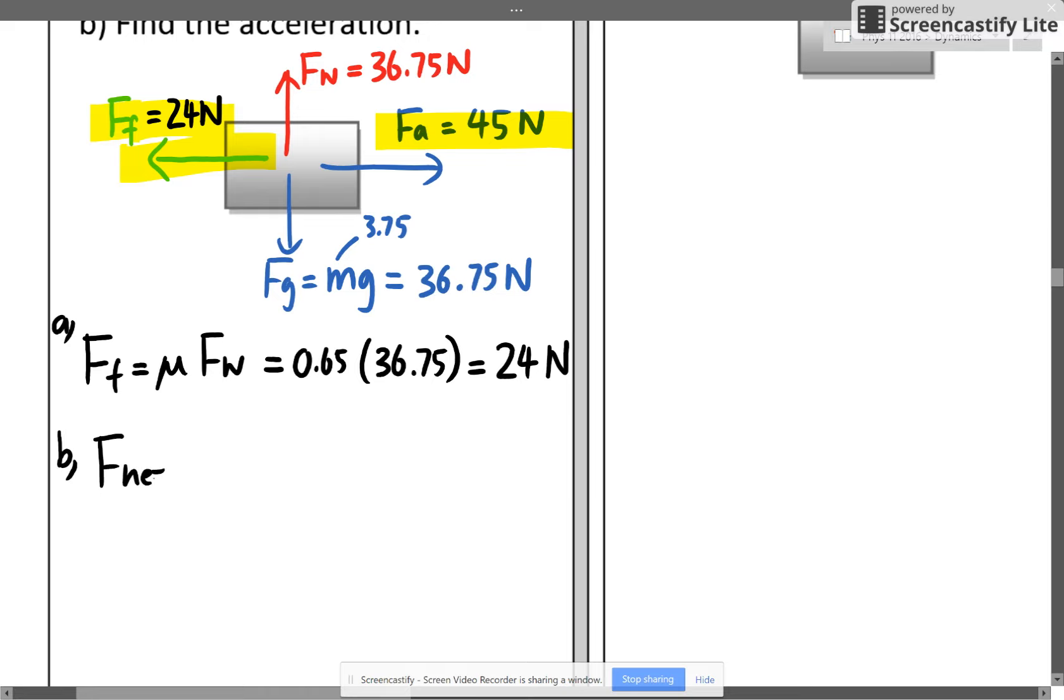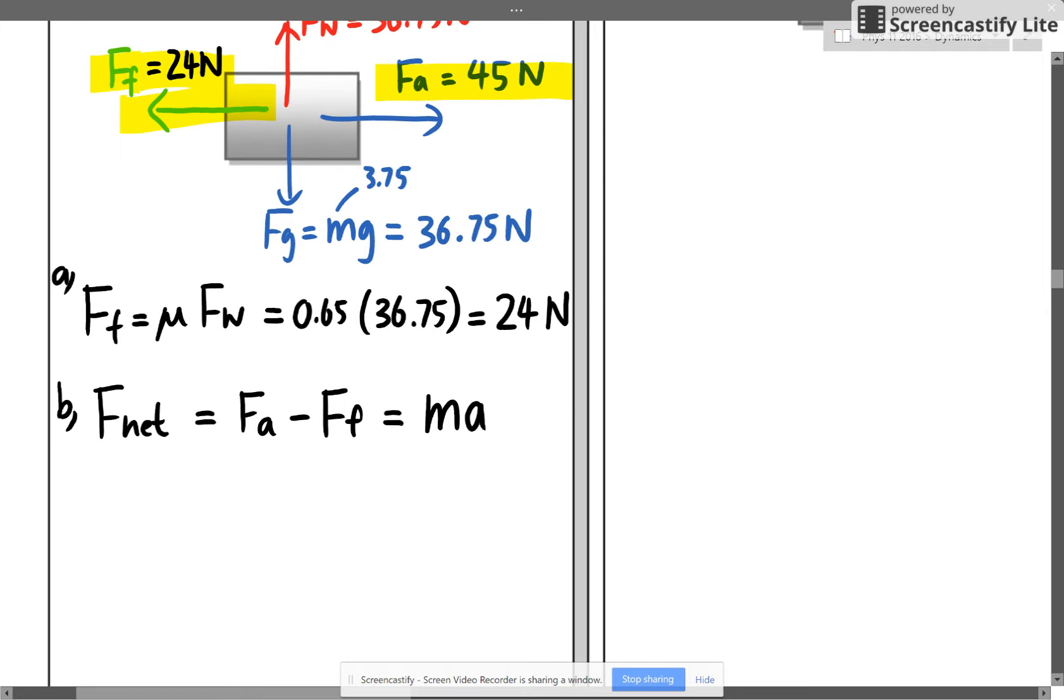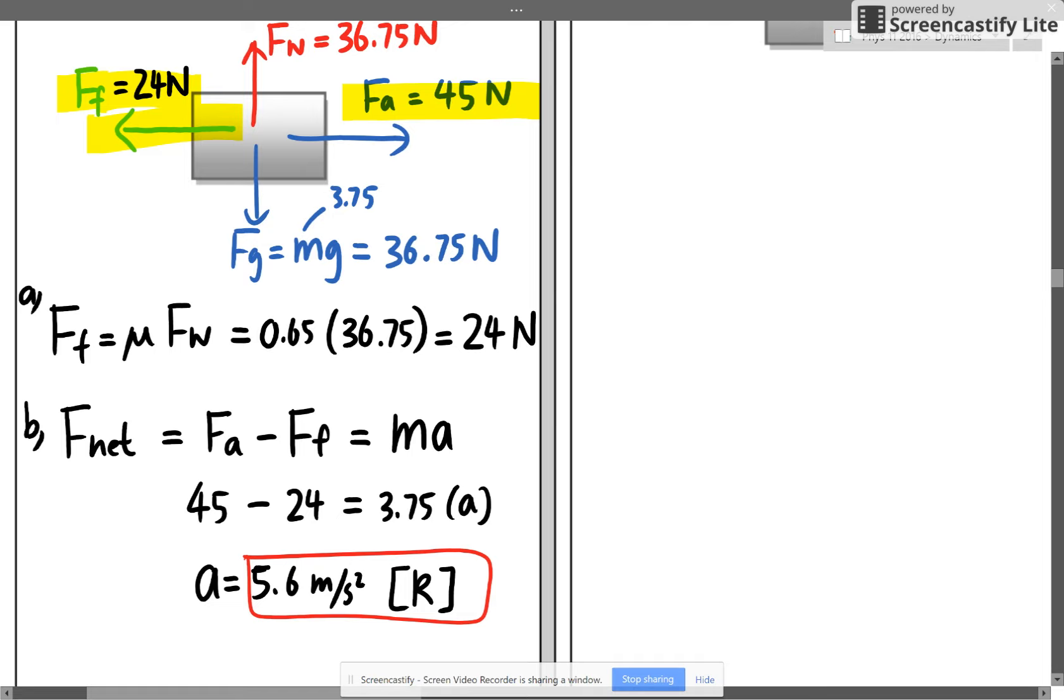When we want to determine acceleration, we always talk about trying to find out the net force. Net force is the winning force minus the losing one. In this case, the applied force which is 45 newton is trying to fight friction which is 24 newton. So I should take applied force and minus friction. F net always equals ma. So once we use our free body diagram to determine who is winning, we make it equal to ma. So winning side is 45, the losing side friction is 24, mass of the box is 3.75. Look how easy it is to get the acceleration. So now the acceleration is 5.6 meters per second squared, and it's going to the right hand side.